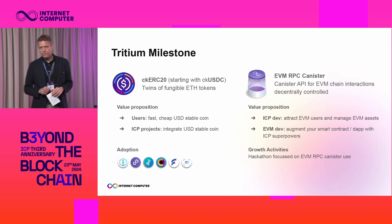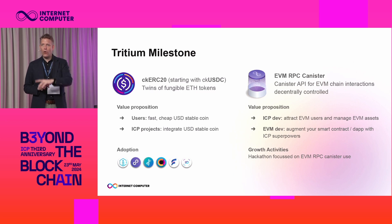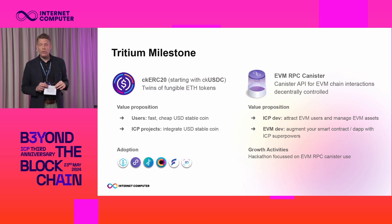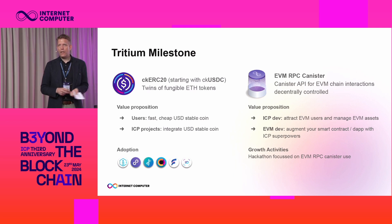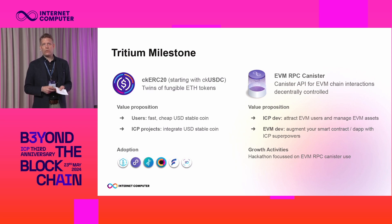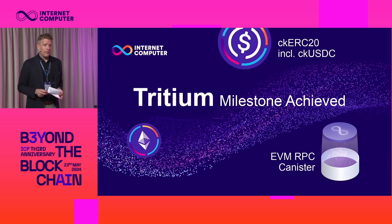The Tritium milestone brings ckERC-20 tokens, which will provide fast and low-cost access to a huge wealth of tokens. A notable detail: in contrast to most other chains, you can transact these tokens without the need for an additional gas token — you can actually pay for transactions using the token itself. For example, you can pay in ckUSDC to make a ckUSDC transaction, which is a major improvement in terms of convenience. Additionally, the EVM RPC canister, which enables the decentralized RPC integration, will be put under NNS control and is thereby ready for prime time.